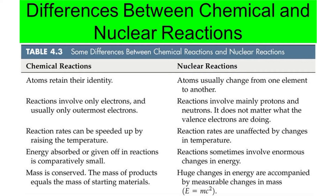Second, chemical reactions involve only electrons — specifically the outermost valence electrons. In normal chemical reactions, those valence electrons are what participate in the reaction. But in the case of nuclear reactions, the reaction involves mainly the protons and the neutrons, so it does not matter what the valence electrons are doing. Therefore, in nuclear reactions both protons and neutrons are involved without involving the valence electrons.